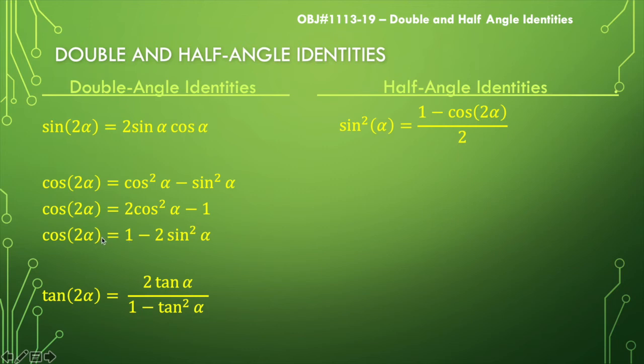Sine squared of a is equal to one minus cosine of two a all over two. Now what if I didn't want this to be a and this to be twice the amount. What if I wanted this to be a? I would still have the relationship of a one to two ratio for these arguments.